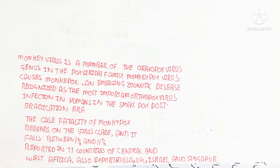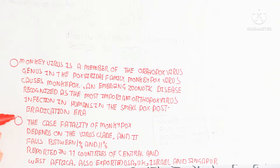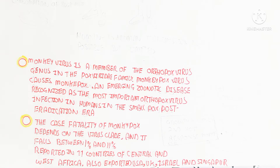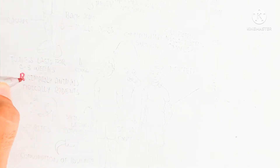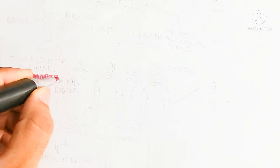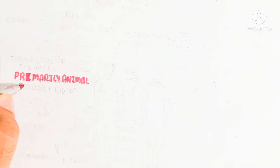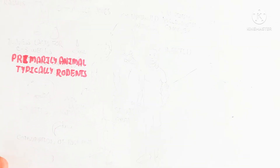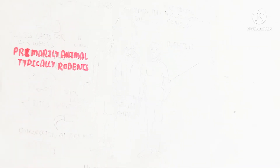The monkeypox virus is a DNA virus, not an RNA virus — unlike COVID-19 coronavirus, which was an RNA virus. This virus has a double helical DNA structure. Primarily, animals — typically rodents — are infected as the main reservoir hosts.